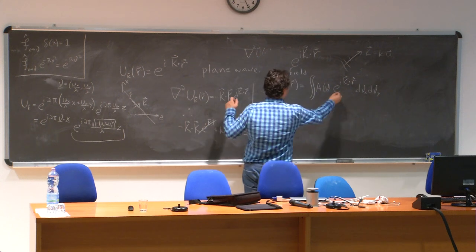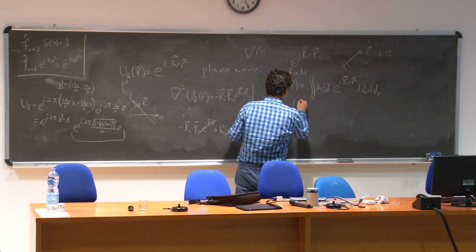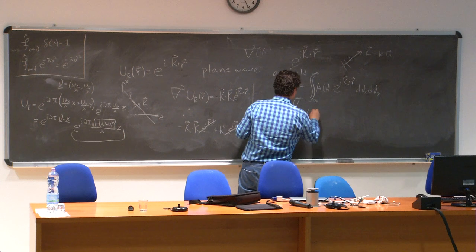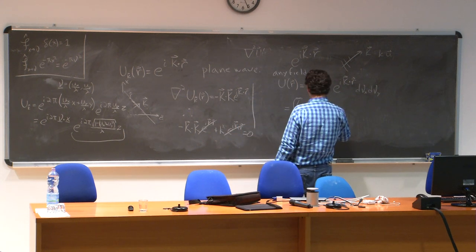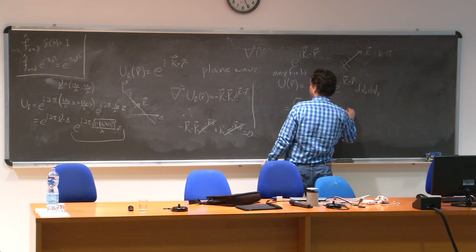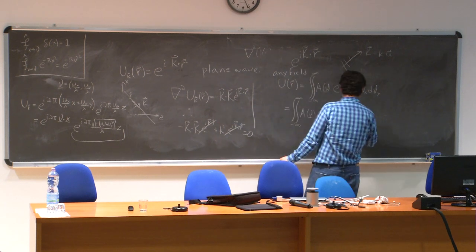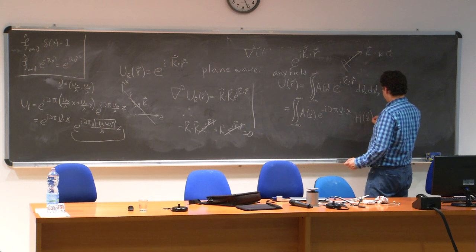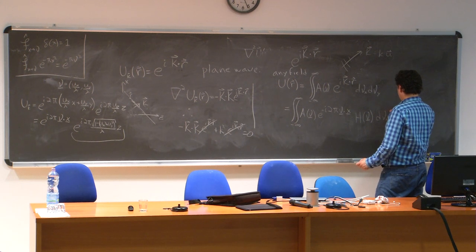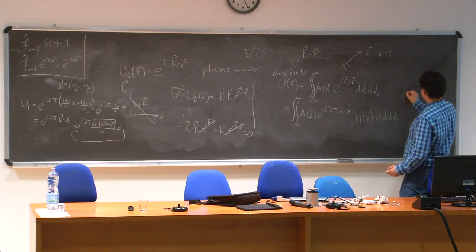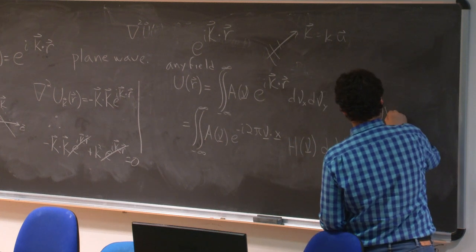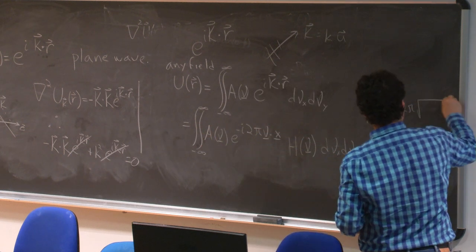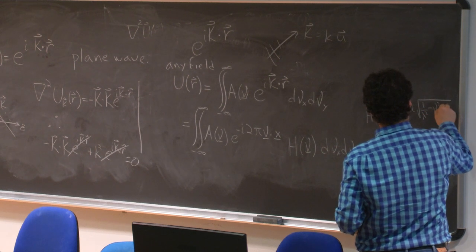But if I write this again, substituting this form, then this is the same as the integral. And it's from minus infinity to infinity a of nu e to the minus i two pi nu dot x. And this part that I can write as e to the i. Let me write this part as h of nu d nu x d nu y, where h of nu is that exponential e to the i two pi. And then I can bring that lambda inside of the square root.